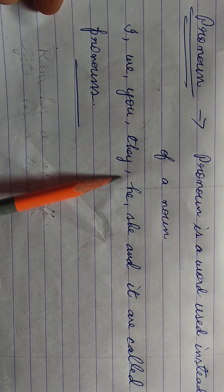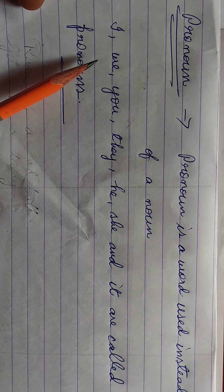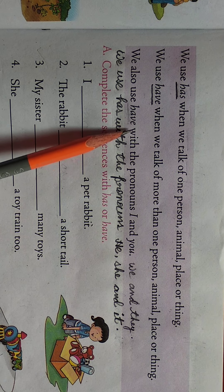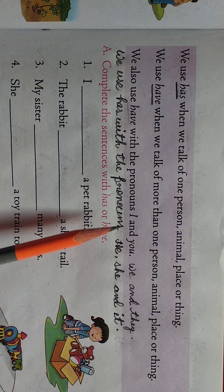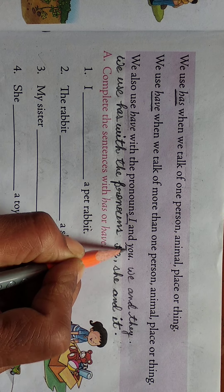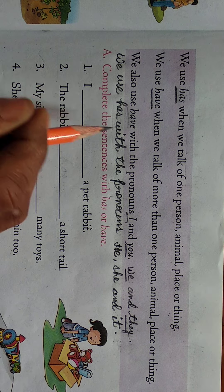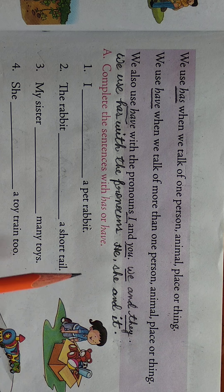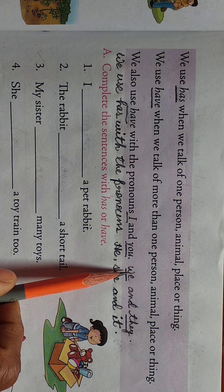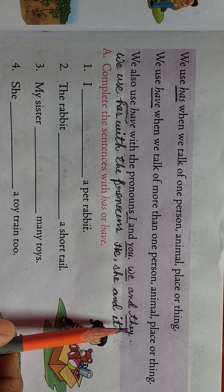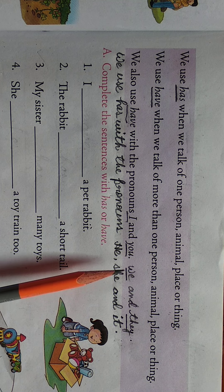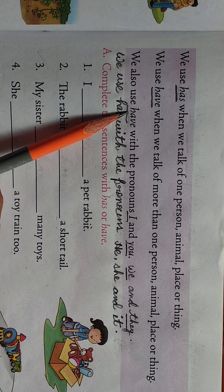What are pronouns? I, we, you, they, he, she, and it are called pronouns. We have already discussed about this topic. So here, we also use 'have' with the pronouns I, you, we, and they. इन four pronoun words के साथ have use किया जाता है. For example: I have a pencil. You have a book. We have beautiful flowers. They have four balloons. In this way, I, you, we, and they के साथ have use किया जाता है.